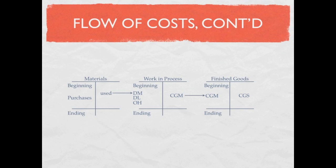Once a product was completed, it moved out of work in process into finished goods as our cost of goods manufactured, and it remained in finished goods until the product was sold and we expensed it as cost of goods sold.